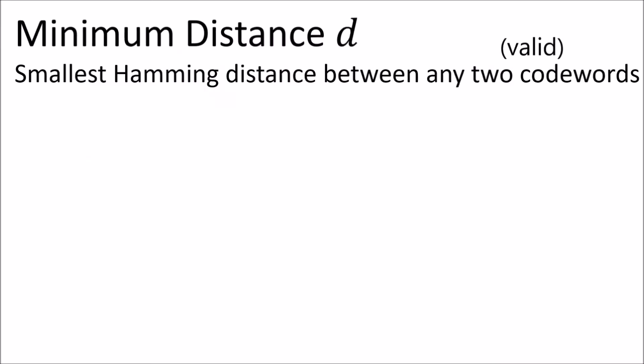We'll define the minimum distance d of a code, which is the smallest Hamming distance between any pair of valid code words.